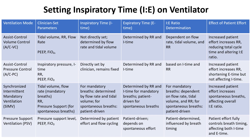Here is a table of how inspiratory time, expiratory time, and IE ratio are determined in other modes of ventilation. If we understand volume control and pressure control ventilation, we can directly determine I time, E time, and the IE ratio in other modes since they follow the same fundamental principles. In any mode with mandatory breaths — such as assist-control volume control, assist-control pressure control, and synchronized intermittent mandatory ventilation — these parameters are set similarly, either indirectly through flow rate and tidal volume in volume-control-based modes, or directly through inspiratory time in pressure-control-based modes.